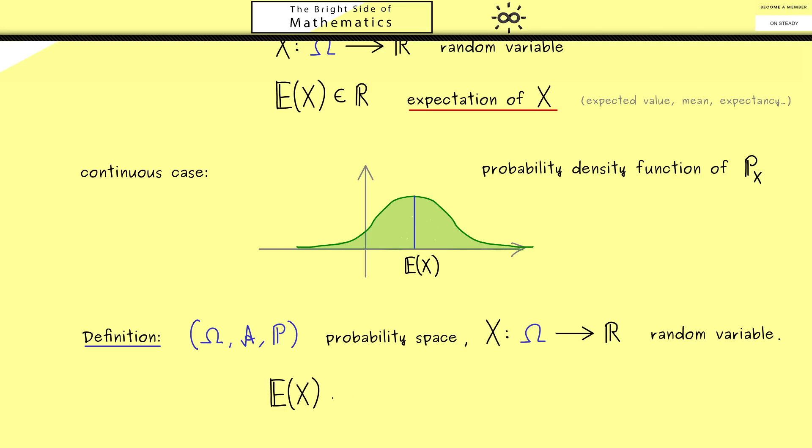Now E(X) is simply defined as the abstract integral of X, so integral over Ω of X dP. At this point you might not have any idea what this means, which is not a problem at all.